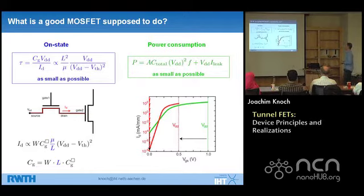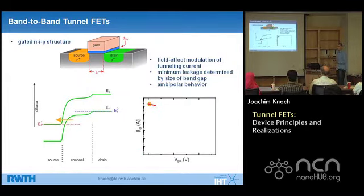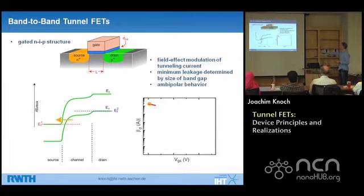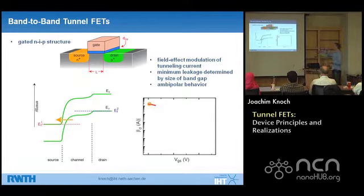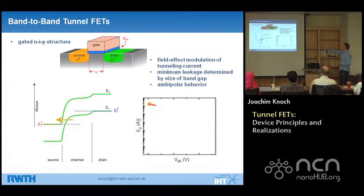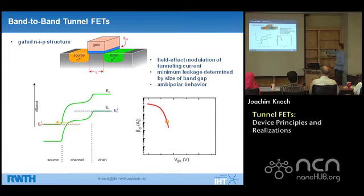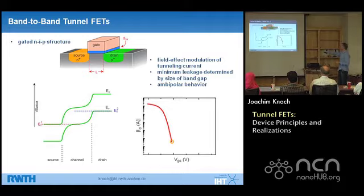A tunnel FET is basically a gated NIP or PIN device. In the on state, the valence band in the channel is lifted above the conduction band in the source, opening a window for band-to-band tunneling and giving a certain on-state performance. If I now apply a gate voltage and move the bands down, this window becomes smaller and the barrier becomes thicker, meaning the current goes down exponentially.